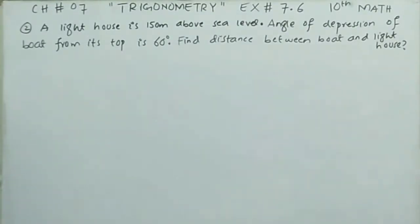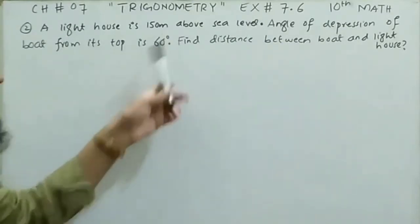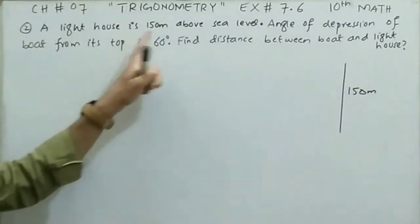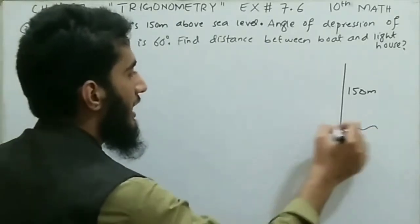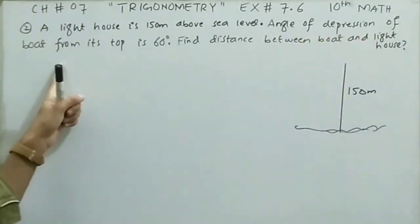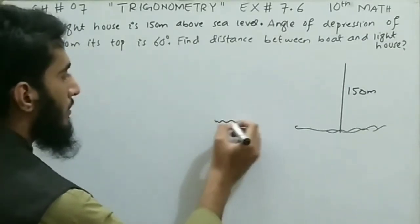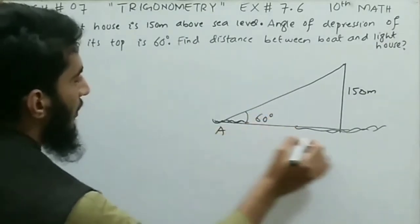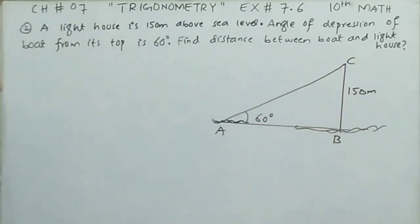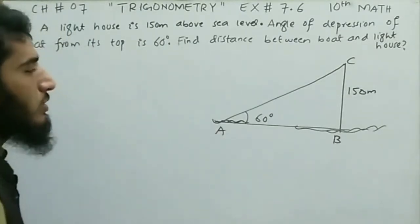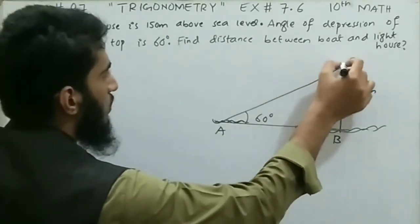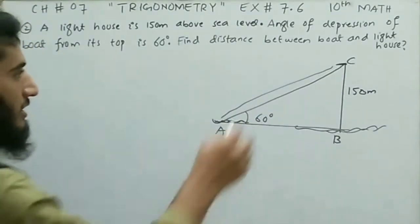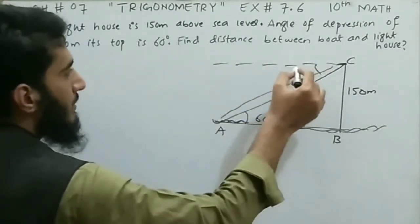Question number 2: A lighthouse is 150 meters above the sea level. The angle of depression of a boat from the top of the lighthouse is 60 degrees. The angle of depression occurs when a person standing at height looks downward toward an object below; that angle is called the angle of depression. So here, the angle of depression is 60 degrees. Let's label the points A, B, and C.